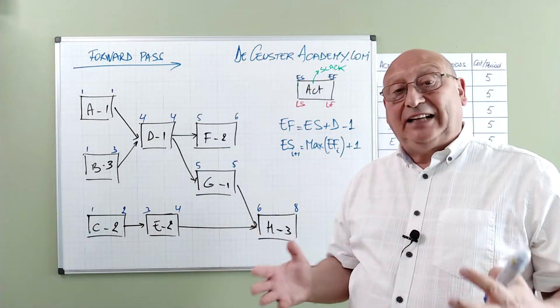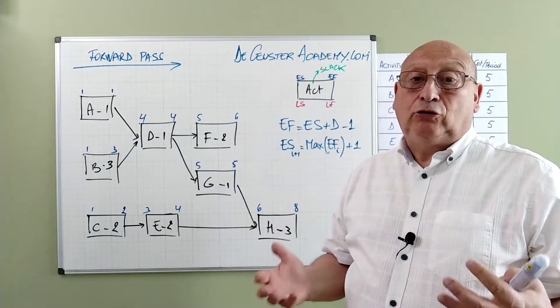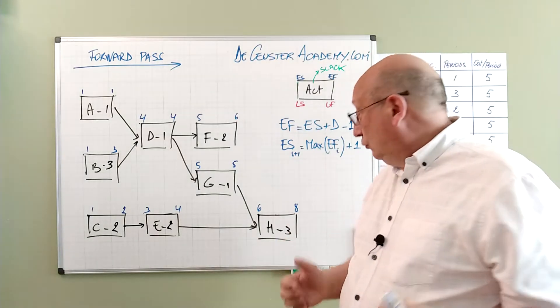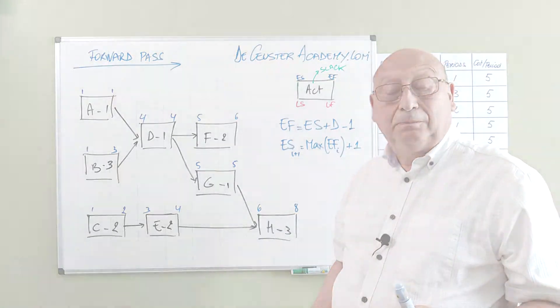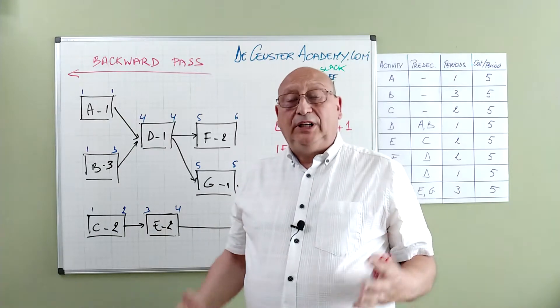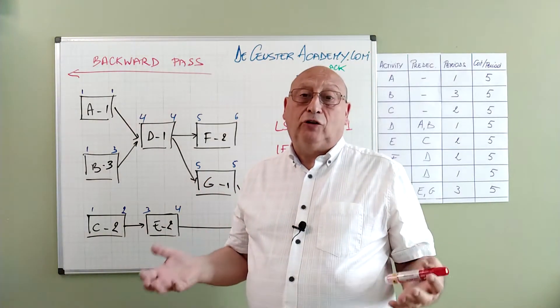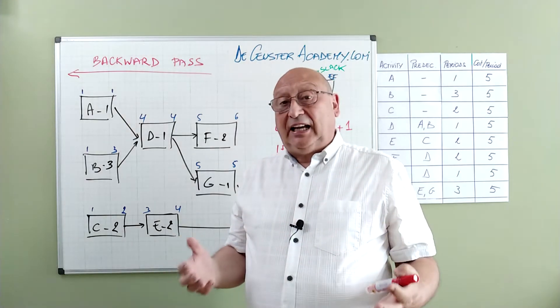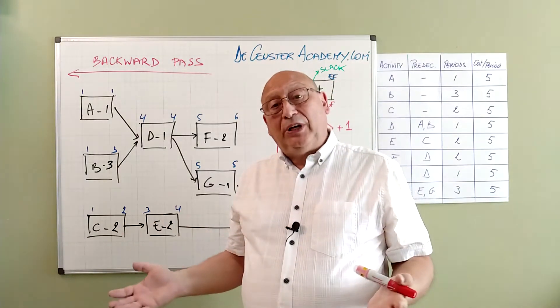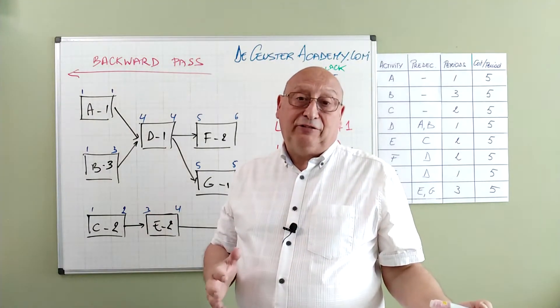And we find that the project duration is equal to 8 periods. The next thing we have to do now is to calculate the late start and the late finish of all the activities. Like I said before this is called the backward pass. And we calculate from right till left.